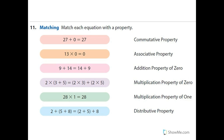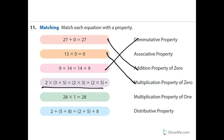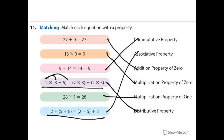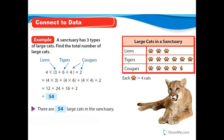27 plus 0 equals 27 — addition property of zero. 13 times 0 — multiplication property of zero. 9 plus 14 equals 14 plus 9 — commutative property. The expression with distributing two to the three and two to the five — that's the distributive property, not associative. 28 times one — multiplication property of one. Moving parentheses around — associative property.